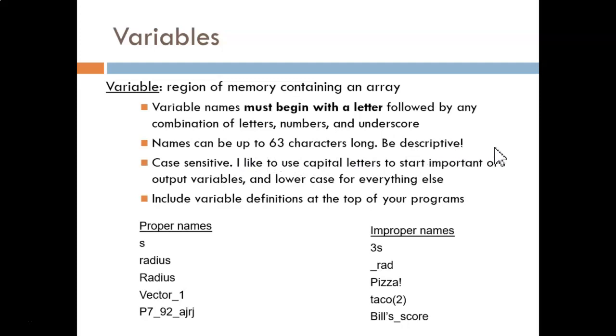Variable names can be anywhere from 1 to 63 characters long. Be descriptive in the names. For example, if describing the radius of a circle, use a variable named radius rather than just r. This can prevent confusion.